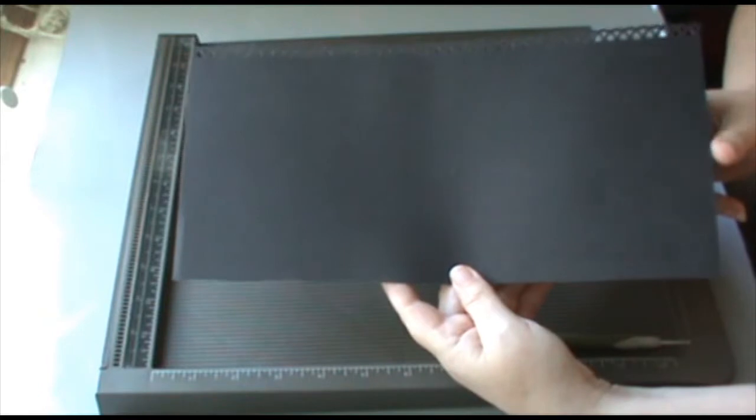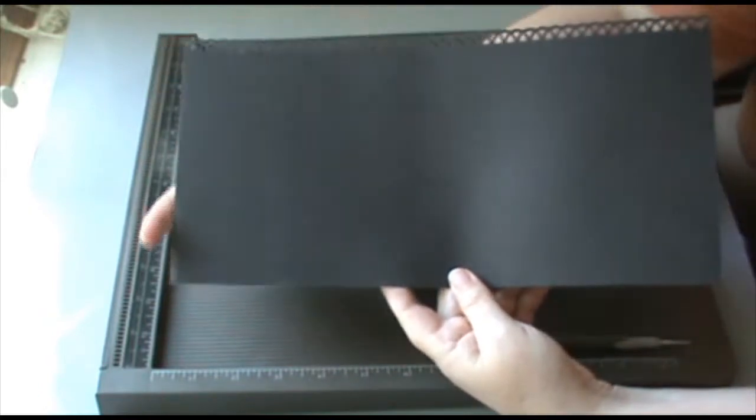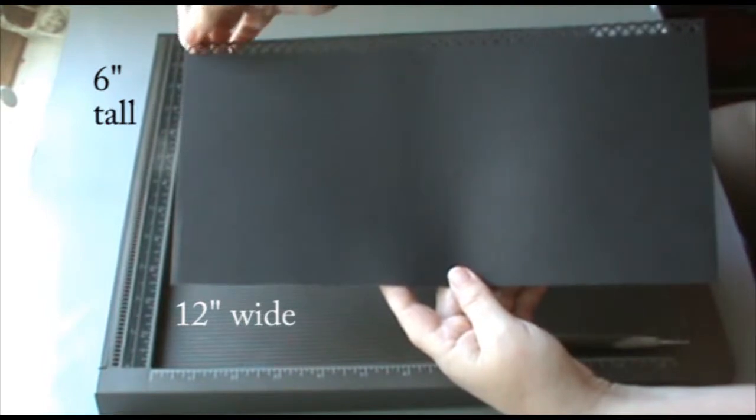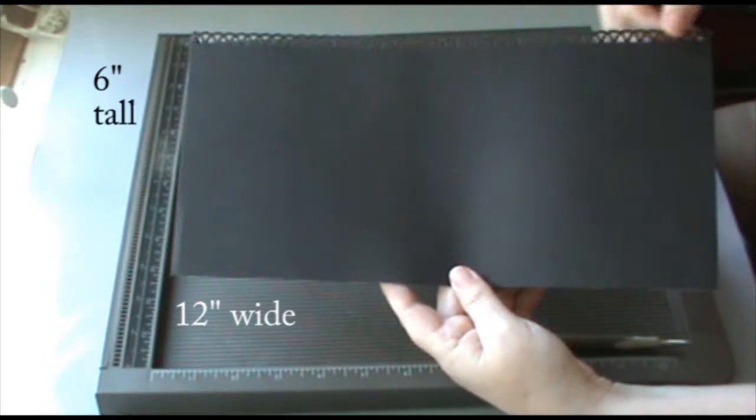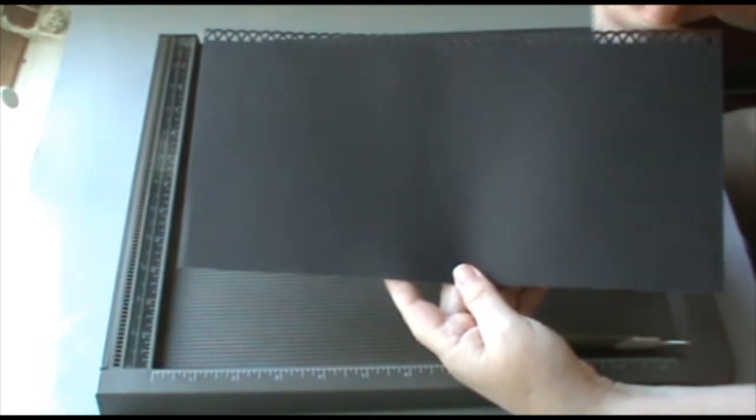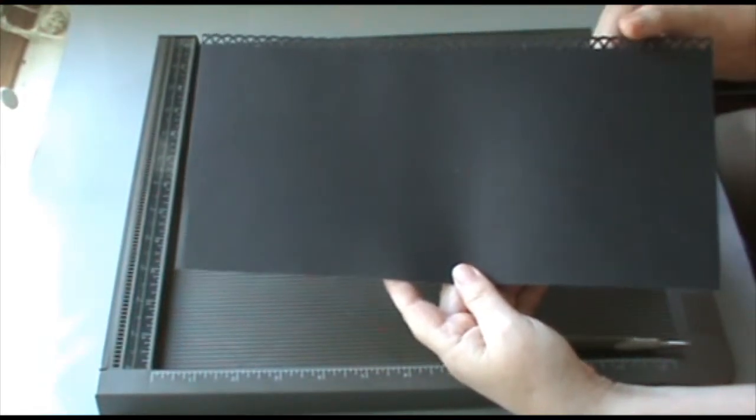The first step is to cut a 6 by 12 inch piece of cardstock. Then you will want to use your favorite border punch and punch the top of the cardstock. If you don't want to do the punching and just want to leave it blank, that's fine too.